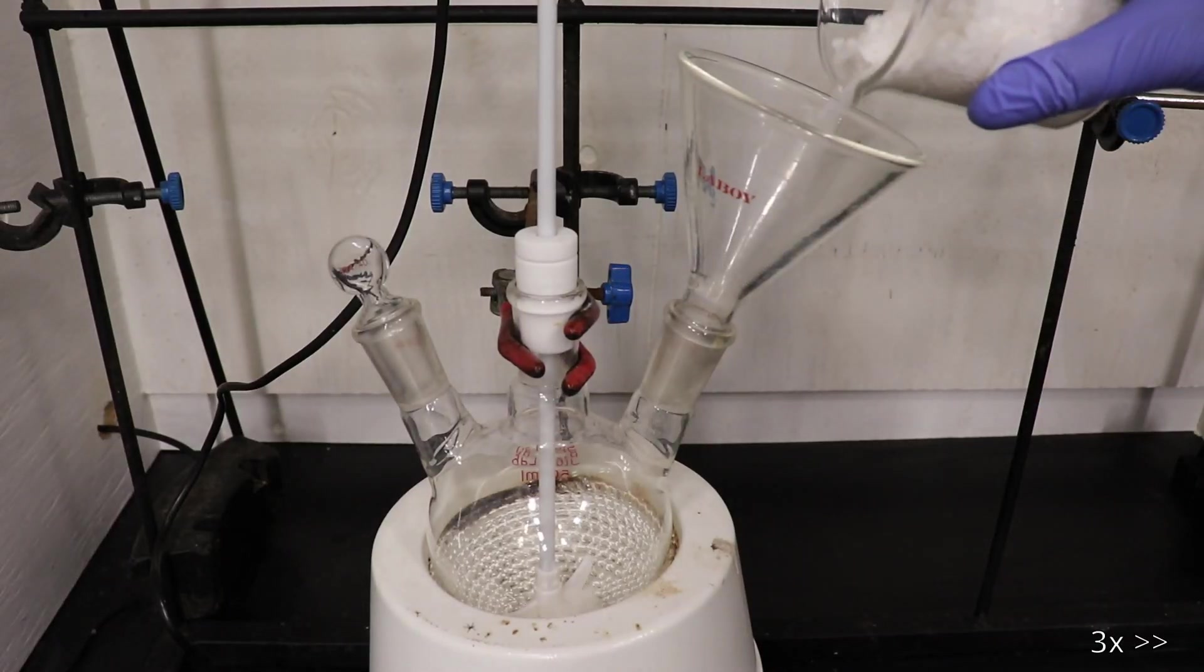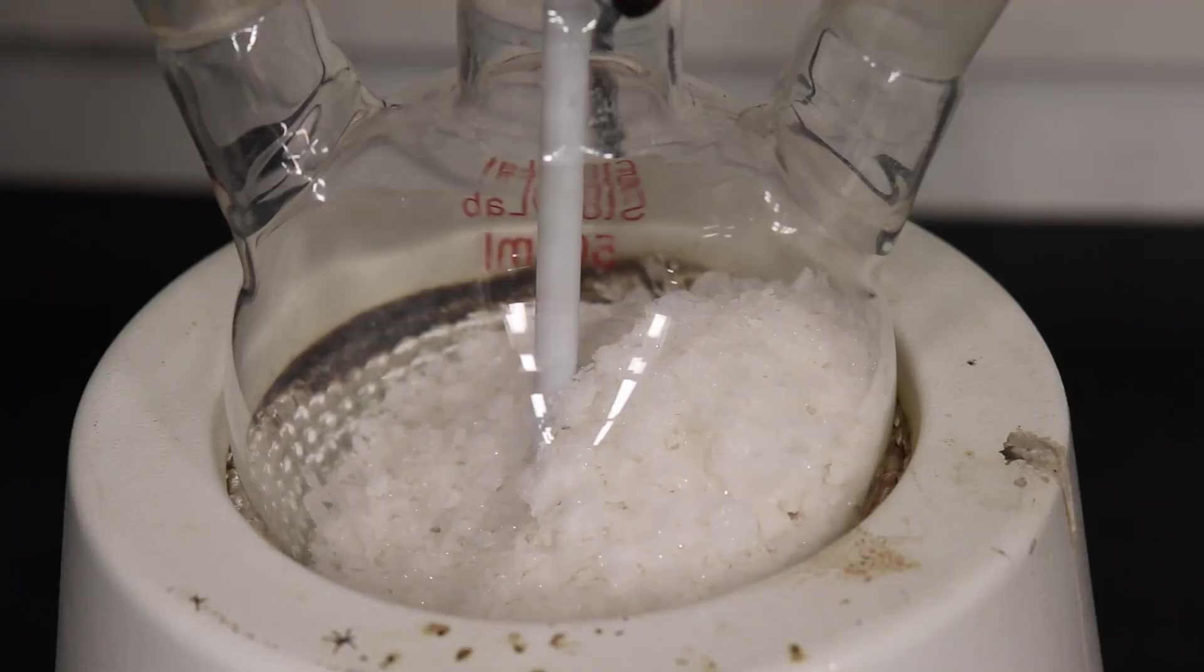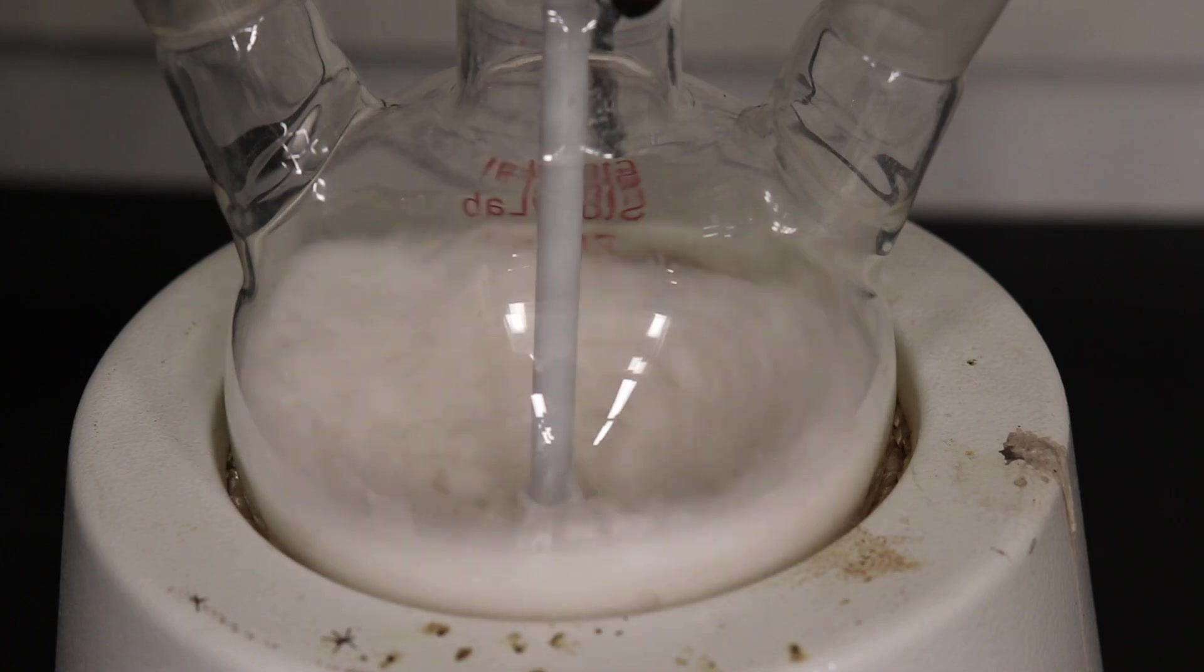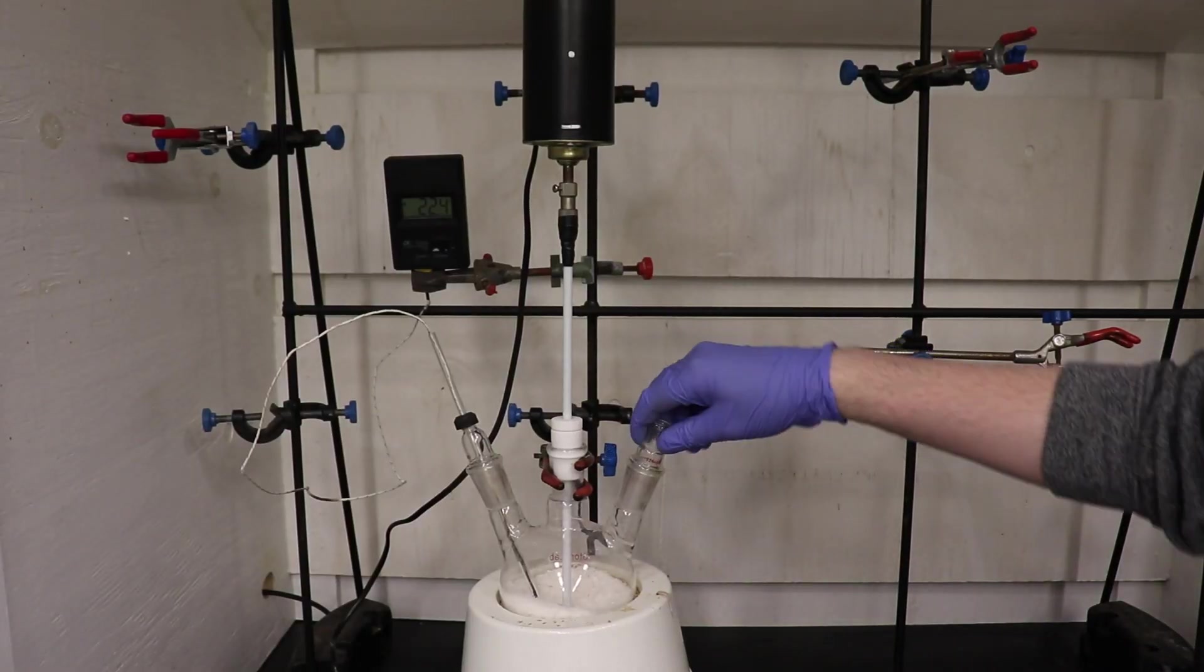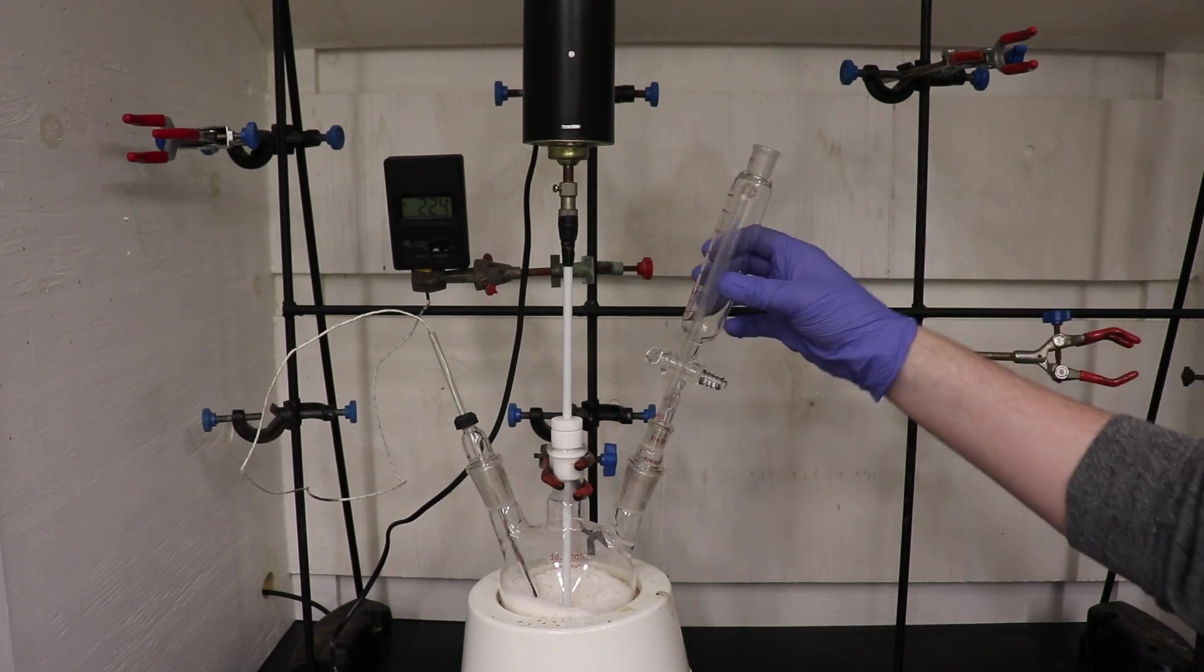The naphthalene was poured into a three-necked 500 milliliter round bottom flask with a mechanical stirrer. Magnetic stirring will work just as well if you don't have a mechanical stirrer. An addition funnel and thermocouple were fitted to the flask, and then sulfuric acid was loaded into the addition funnel.